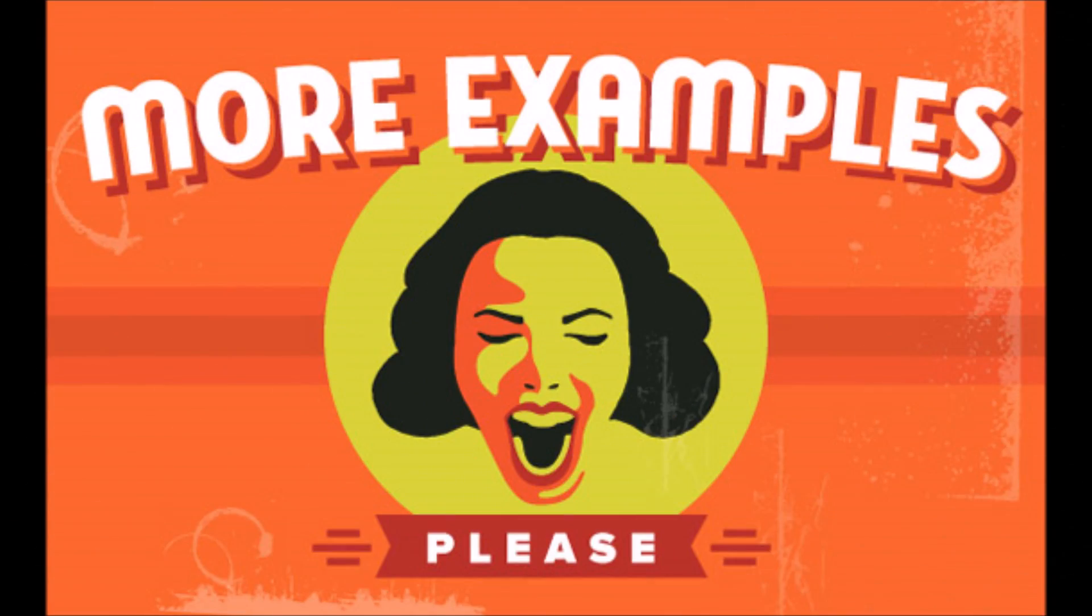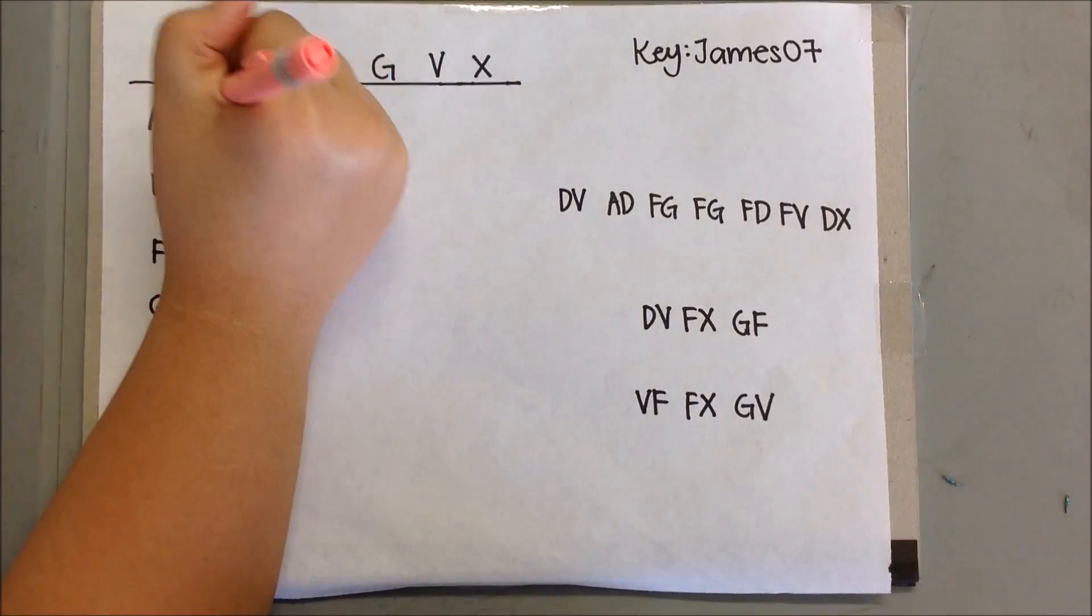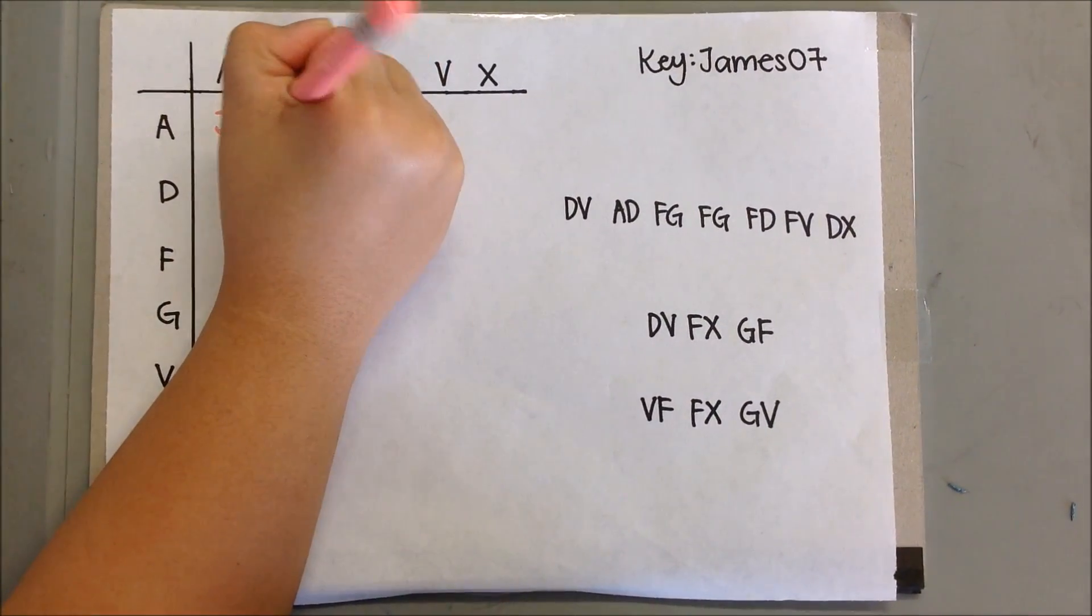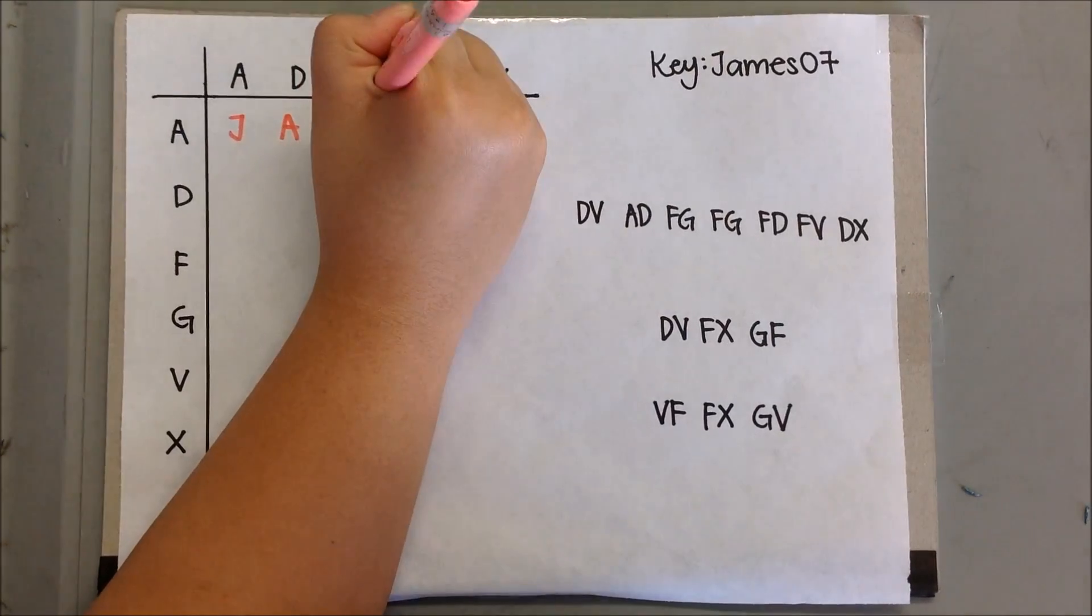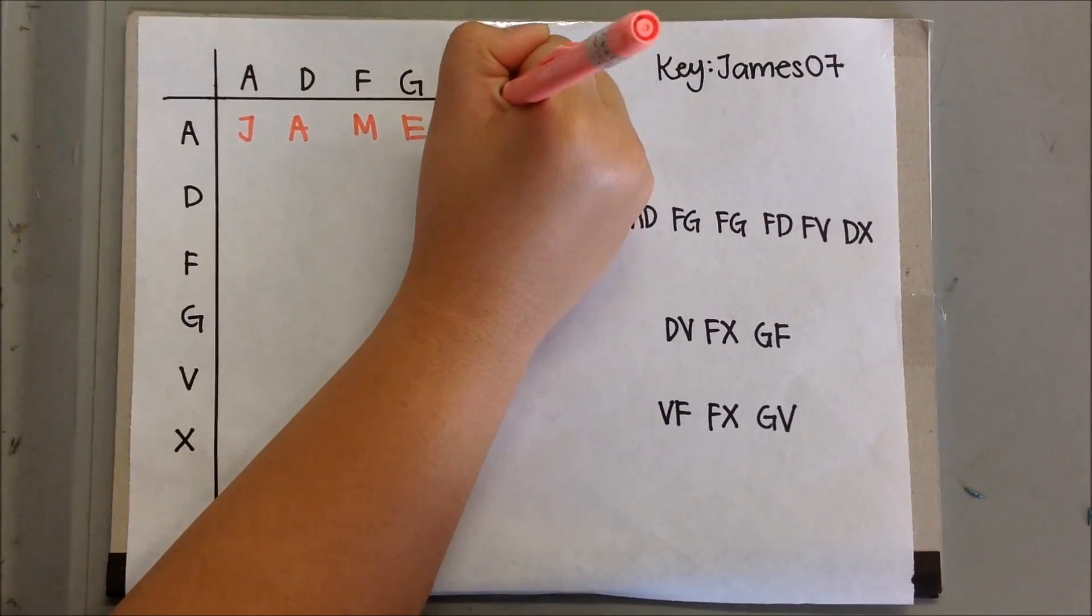So now, let's take a look at a second example. Here we go. Therefore, this is the second encrypted message and the key now is James 07.